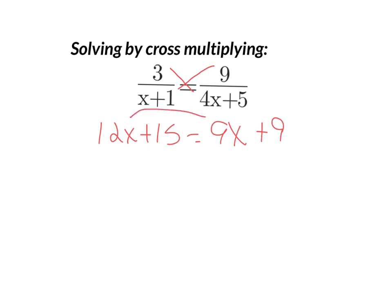So move the 9x over. 3x plus 15 equals 9. I'm moving the 15 over. 3x is negative 6. Divide by 3, you get negative 2.